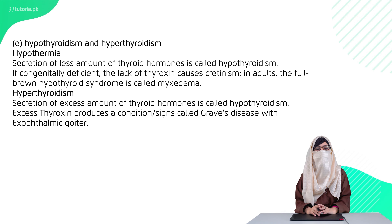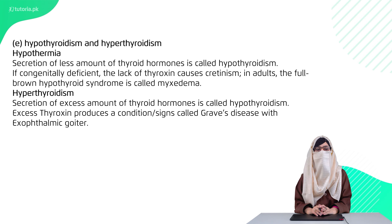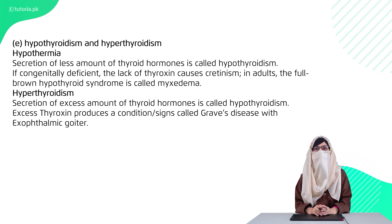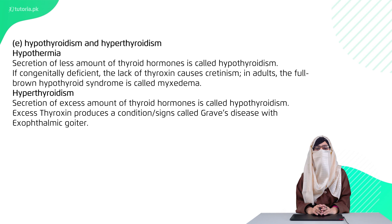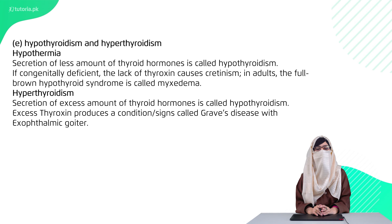The fifth difference: hypothyroidism versus hyperthyroidism. In hypothyroidism, thyroid hormone secretion decreases. In a child, this causes cretinism; in an adult, it causes myxedema. In hyperthyroidism, excess secretion occurs, resulting in Graves' disease.